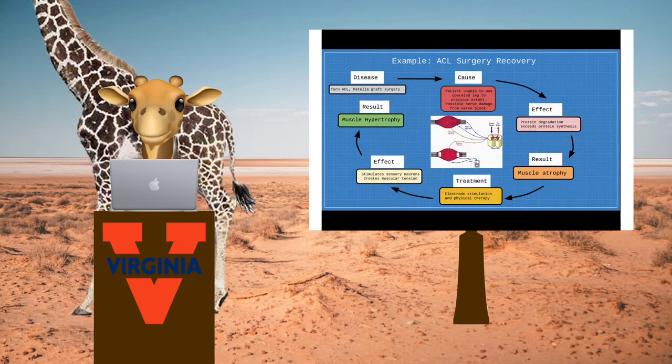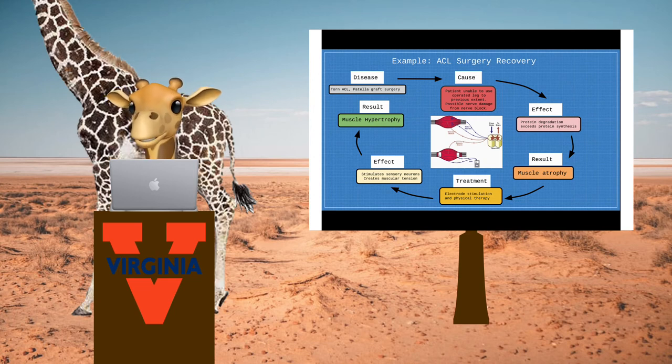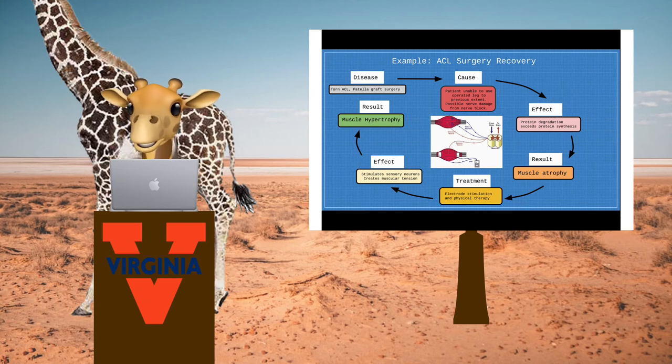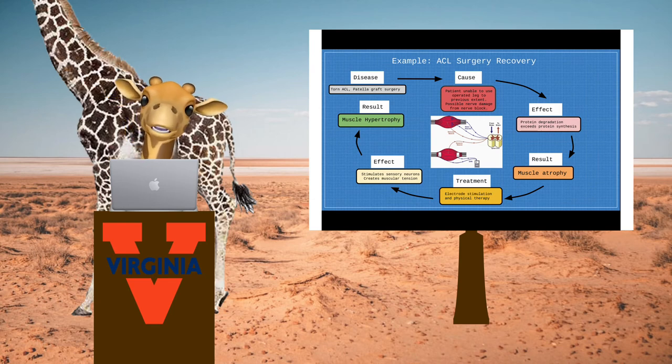Here we will go through an example of ACL surgery recovery to see the process of atrophy to hypertrophy, start to finish. The disease is a torn ACL that's been replaced by a patella graft surgery. This means part of the patella tendon was stripped and used to replace the ACL. The cause of this cycle is the patient's inability to properly use their legs and possible nerve damage from a nerve block used in surgery.